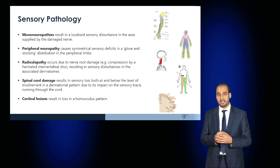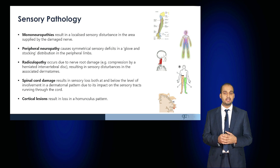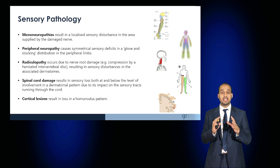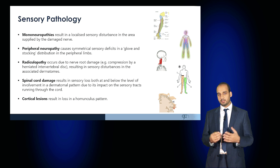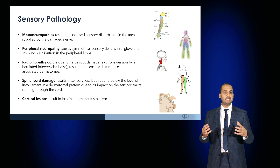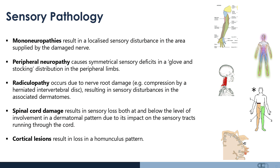Sensory pathology can manifest in a number of ways. Mononeuropathies, where one nerve is affected, result in localized sensory disturbance in the area supplied by the damaged nerve. Peripheral neuropathies cause symmetrical sensory deficits in a glove and stocking distribution. A radiculopathy occurs when there is damage to the nerve root, such as by a herniated intervertebral disc, resulting in sensory disturbance in an associated dermatome. Spinal cord damage results in sensory loss at and below the level in a dermatomal pattern, while cortical lesions result in sensory loss following a homunculus pattern.